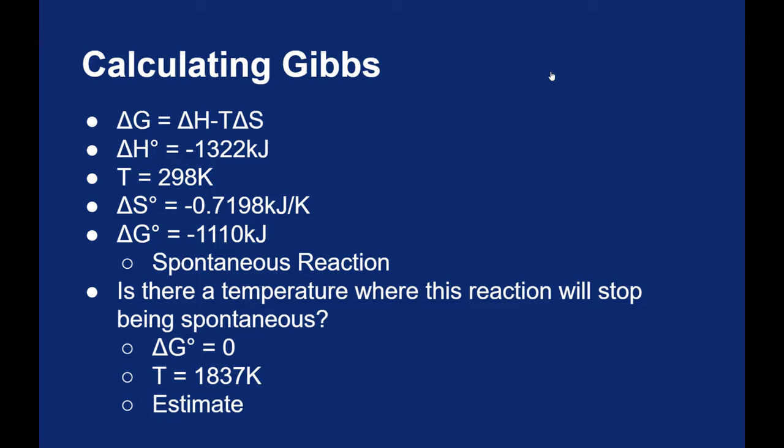One last thought: this temperature is an estimate. I know I've got four sig figs there so it looks really precise, but both delta H and delta S are temperature dependent. So by changing that temperature you would be changing your delta H and delta S values. So the T there is not really accurate. It gives you a ballpark as to what temperature you think the spontaneity would change.